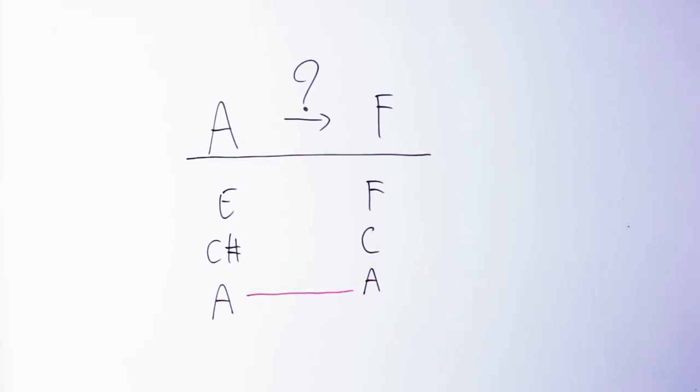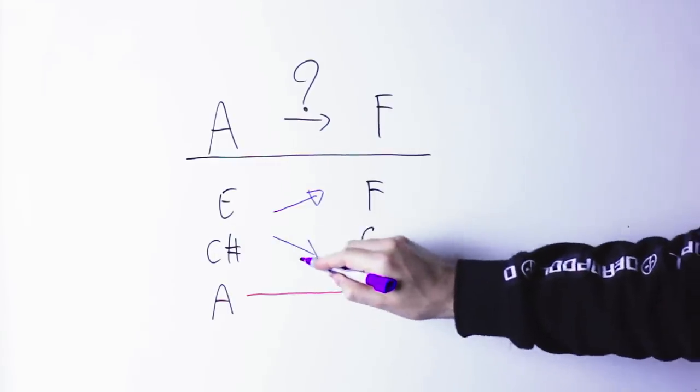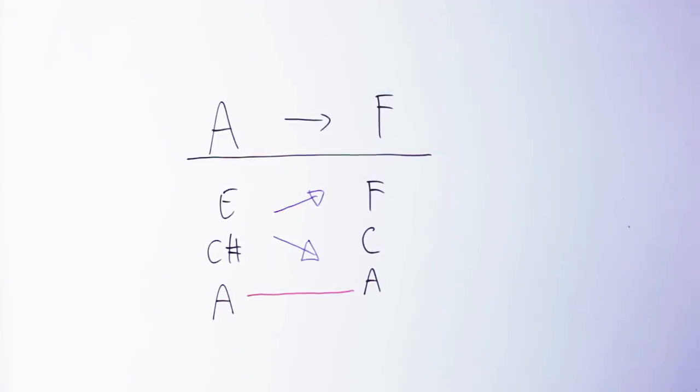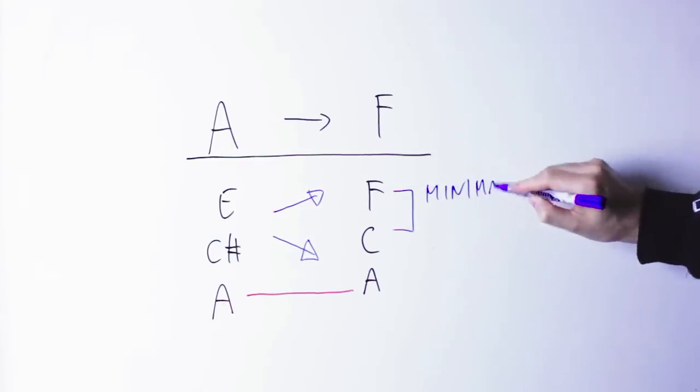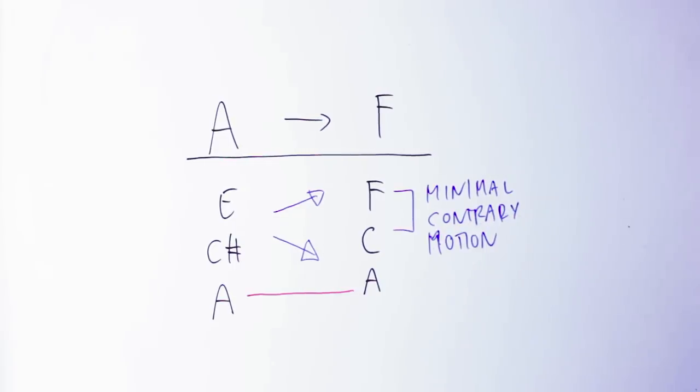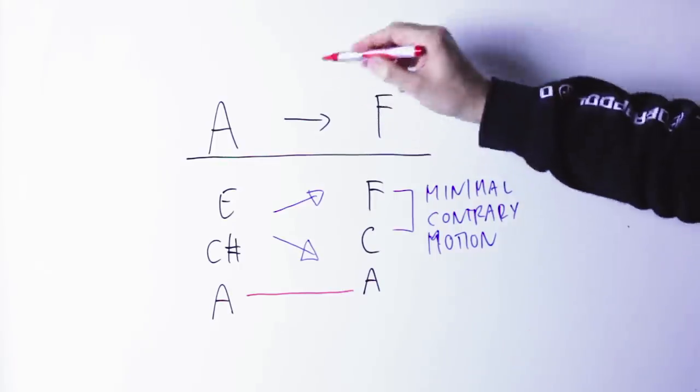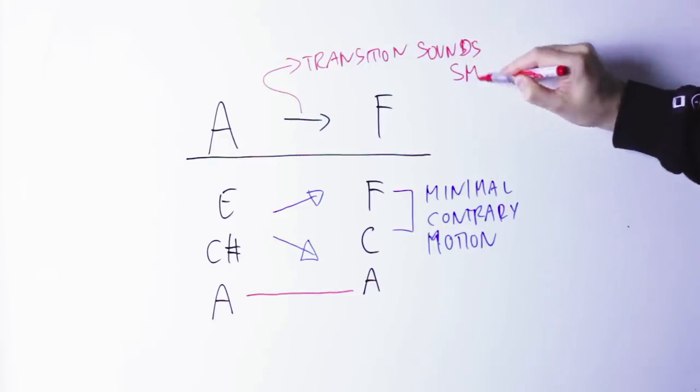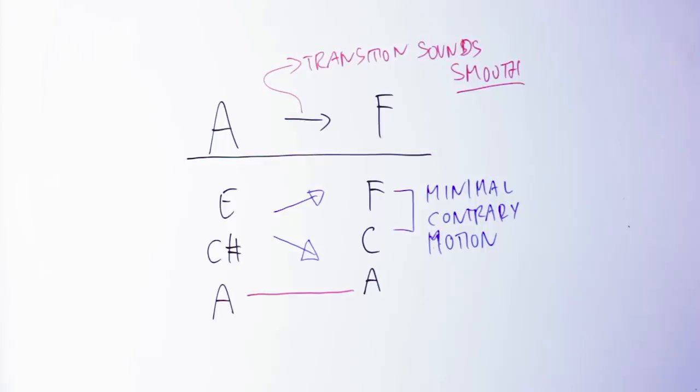Immediately we notice that those two chords have a common note. A is in both chords. The other two notes do something very interesting. The E note in the A chord moves up a half step to the F note in the F chord and the C sharp note in A moves down a half step to the C note in F. So those two notes move in contrary motion, one goes up and one goes down, and they move just one half step, which is the minimum possible motion those notes can make.